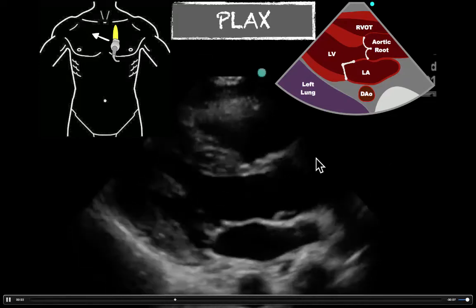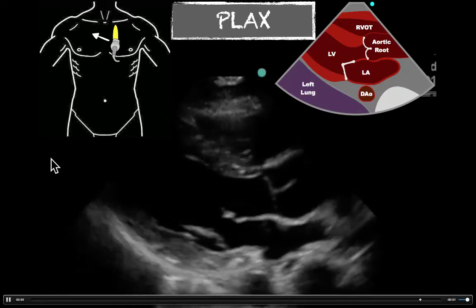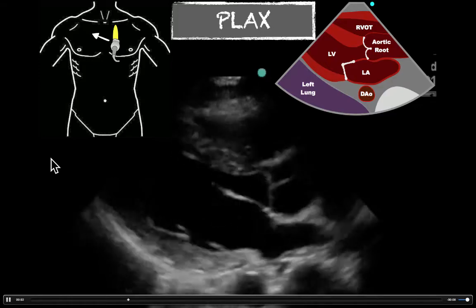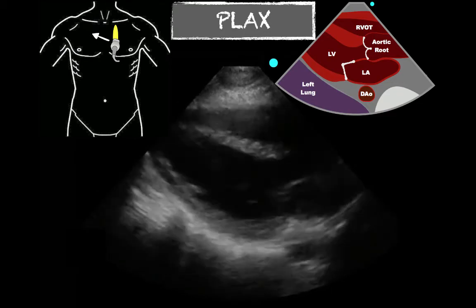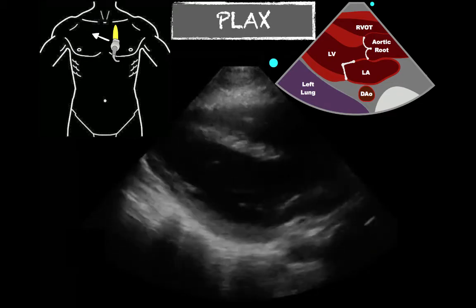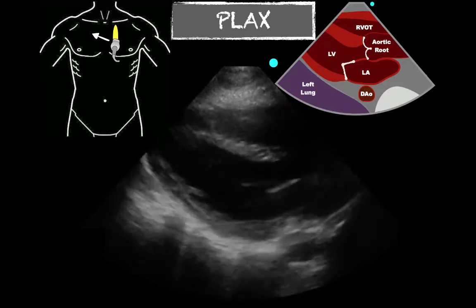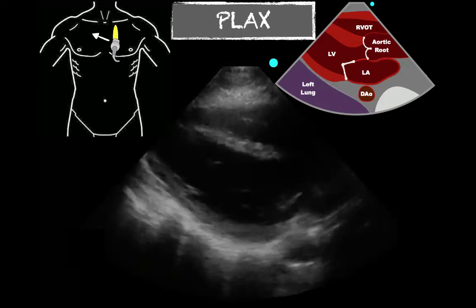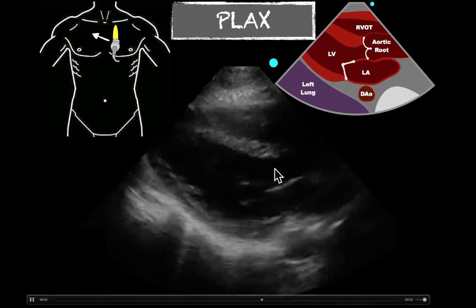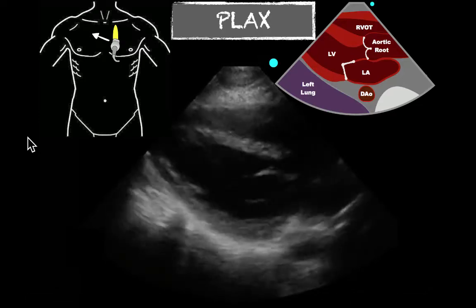First, look and see if those walls are collapsing towards each other. If they are, as in this example, you're pretty well off. In the second example, which is a bit more towards the apex, we can see the septal wall and the outer wall collapsing well towards each other — we can estimate this is a normal EF. And if we struggle with that, we can look at the valve: that anterior mitral valve leaflet is swinging up and hitting the septal wall, giving us a good idea this is a normal ejection fraction.